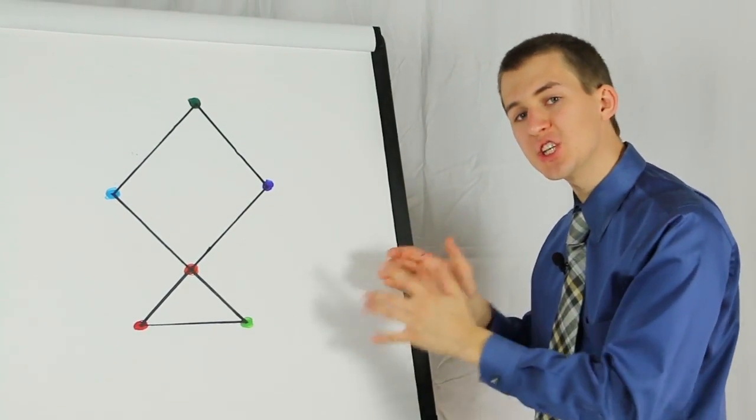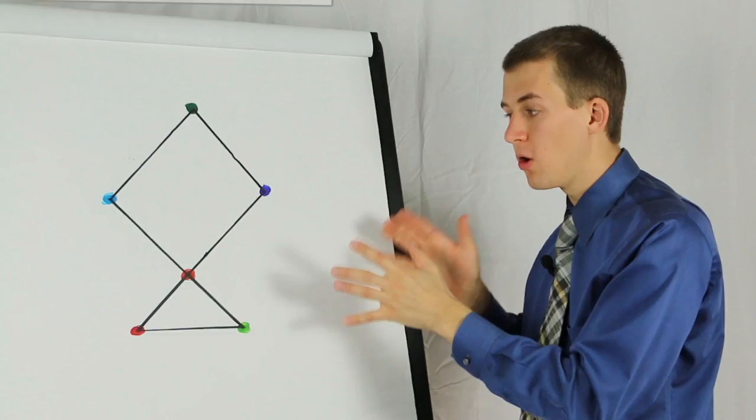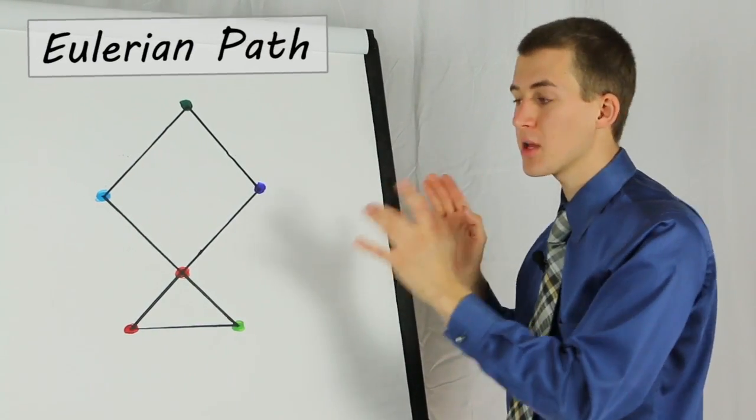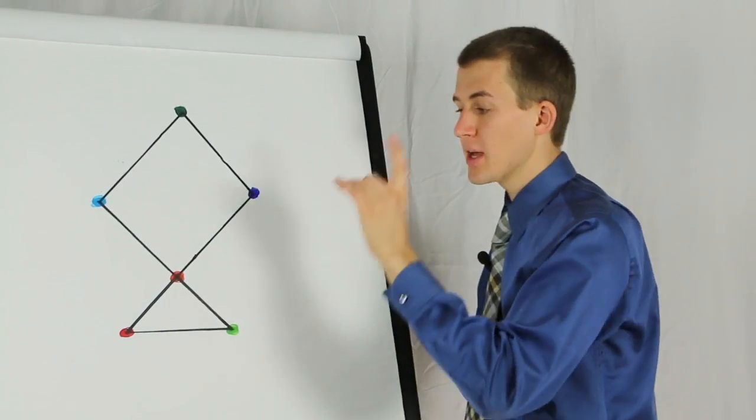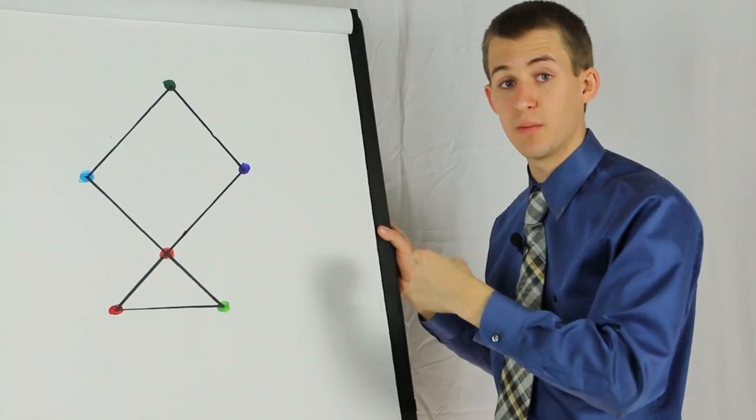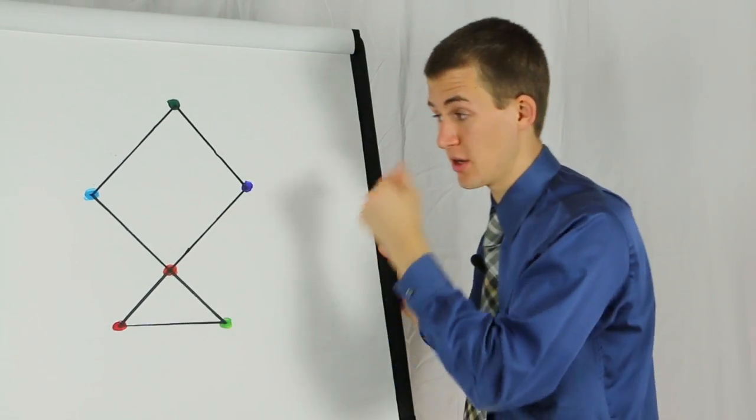If a path travels each edge once, it's called an Eulerian path. Notice how with an Eulerian path, each node has an equal number of incoming and outgoing paths. That's because you have to come into the node and go out of the node.